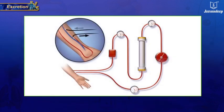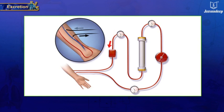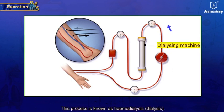When a kidney fails, an artificial device is used for removing nitrogenous waste matter from the blood. This device is known as a dialyzing machine and the process is known as hemodialysis.